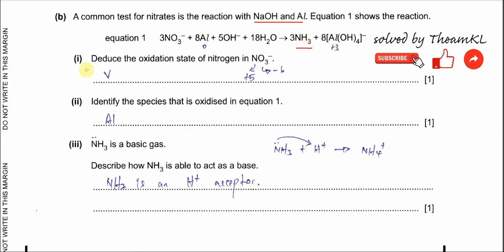Part B1: Deduce the oxidation state of nitrogen in the NO3⁻ nitrate ion. Oxygen is −2 × 3 = −6. The overall charge is −1. So the oxidation state of nitrogen must be +5. According to the latest syllabus, the oxidation state should be written in Roman numerals.